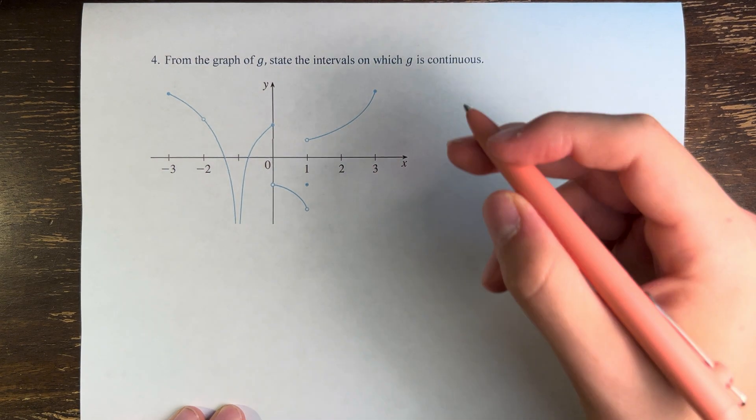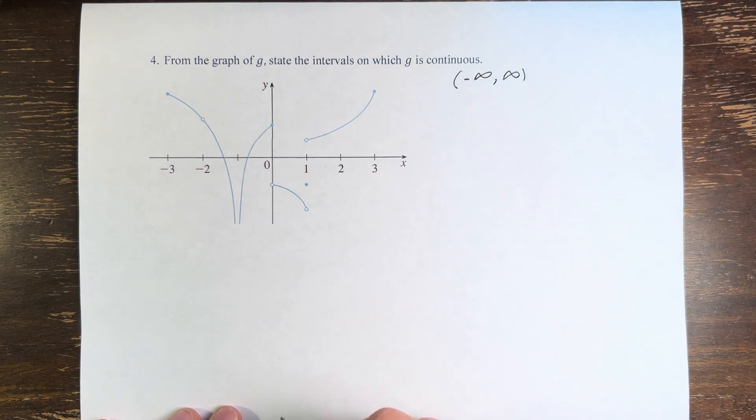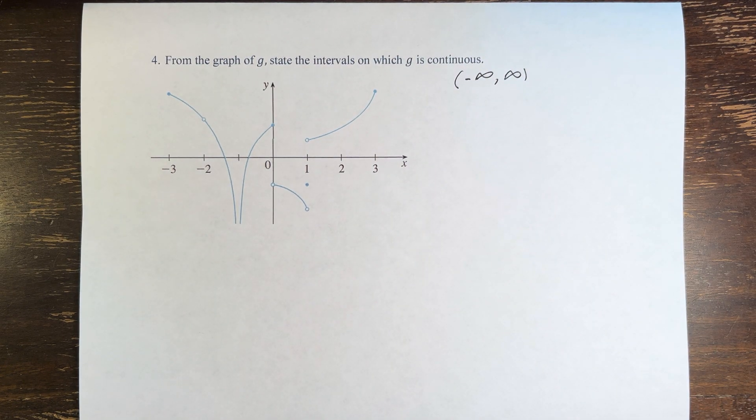So in order to do that, we take the interval negative infinity to infinity, and we take out points where the function is discontinuous.